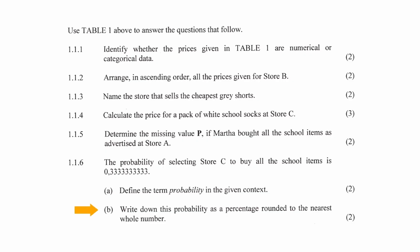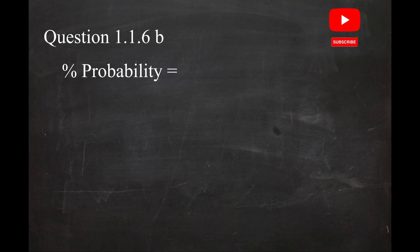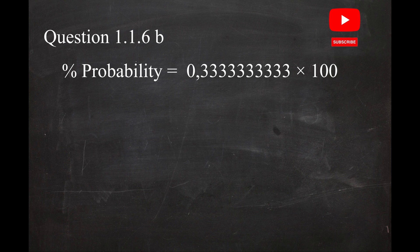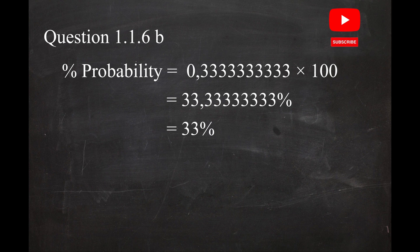In question 1.1.6B, you are instructed to write down this probability as a percentage rounded to the nearest whole number. Since the probability is given as a decimal number, you have to multiply it by 100 to convert it to a percentage. So the probability as a percentage is 0.3 recurring multiplied by 100, which equals 33.3 recurring percent. Rounding to the nearest whole number gives a probability of 33%.